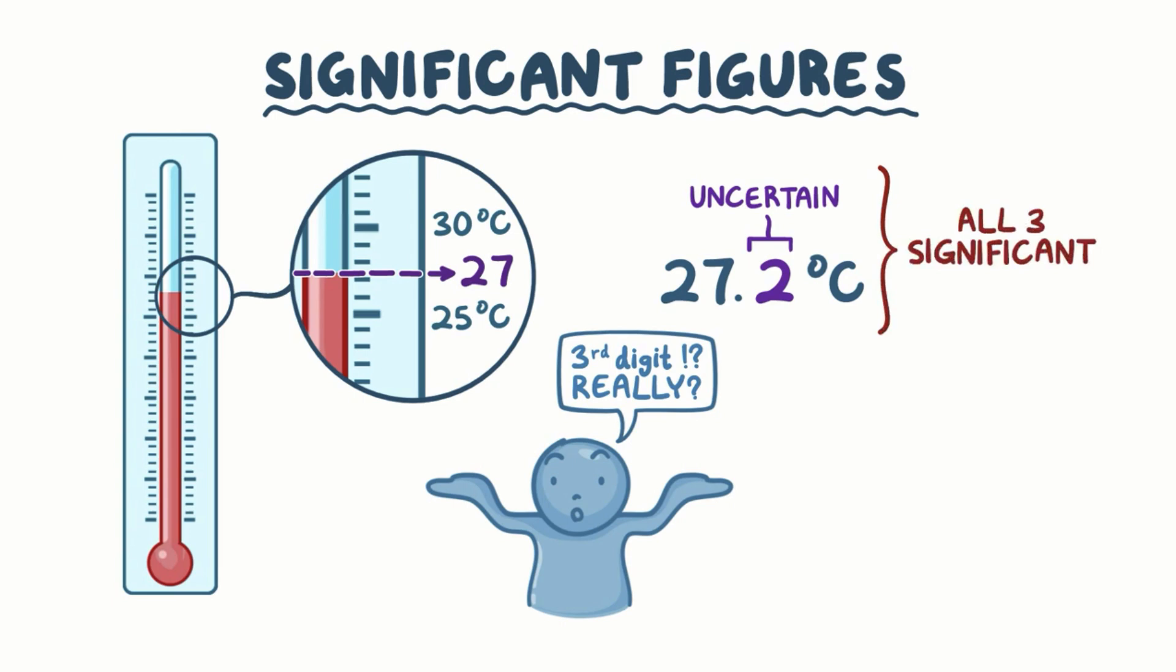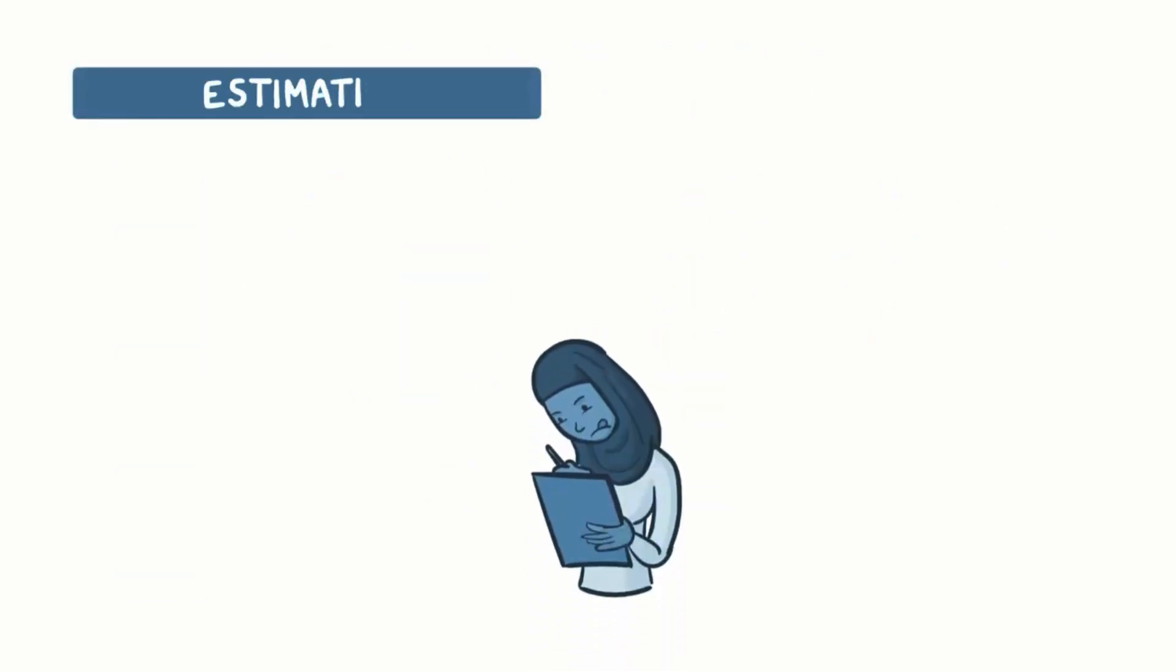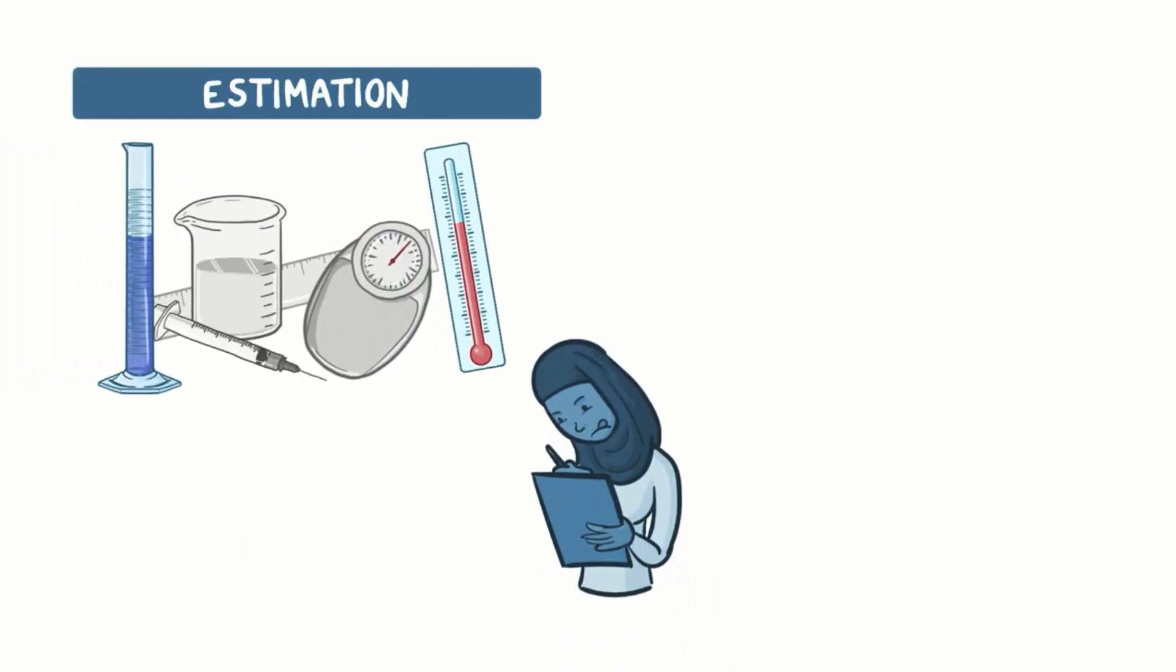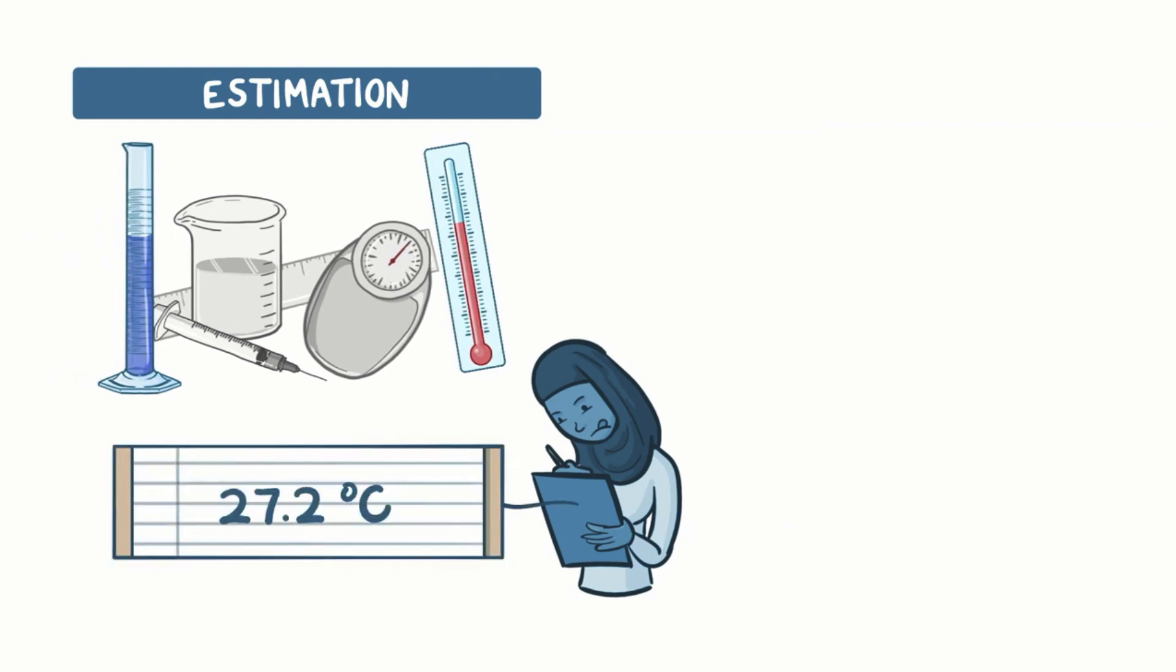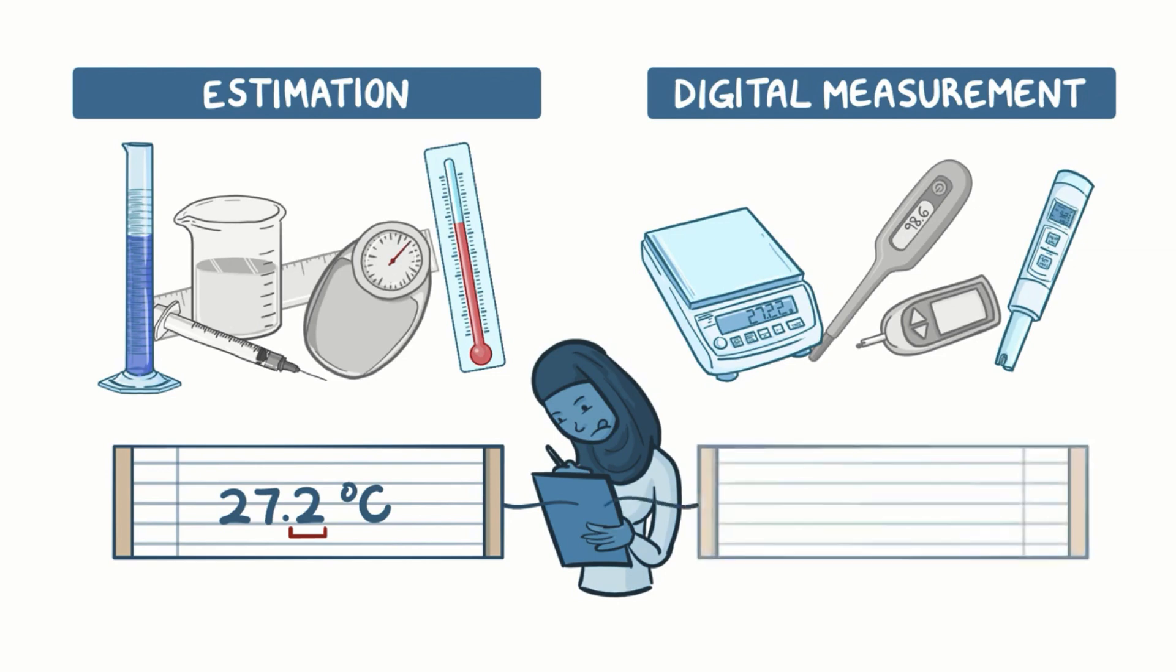In general, when reporting measurements, the precision of your measuring device determines the number of significant digits. If any estimation is involved in reading a number from your device, like a thermometer or a graduated cylinder, then you record a measurement rounded to one decimal place beyond the decimal place of the markings. If you use a digital measurement, like a digital scale or pH probe, then there's no estimation involved. You can just record how many significant figures are reported by the measurement device. So the number of significant figures is affected by the instrument used to perform a measurement.